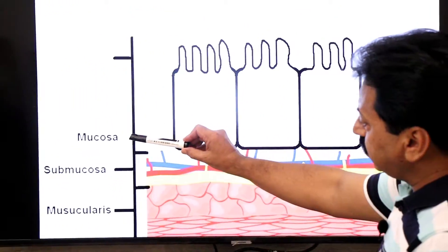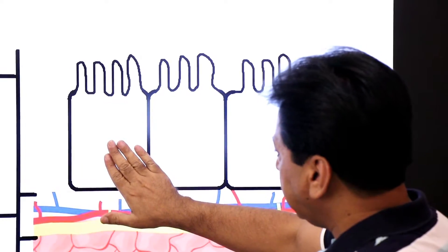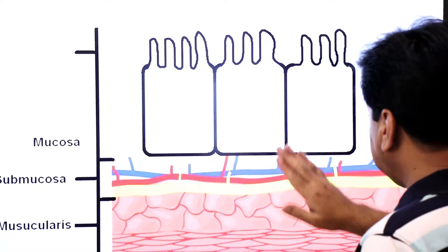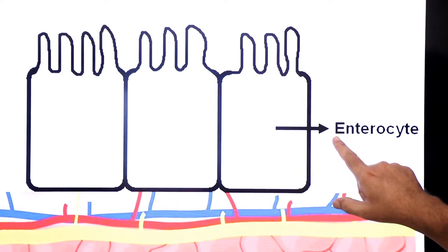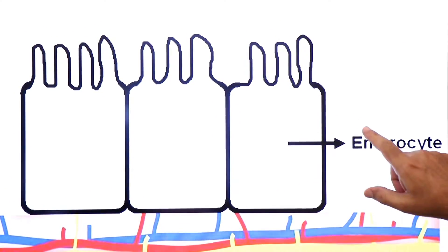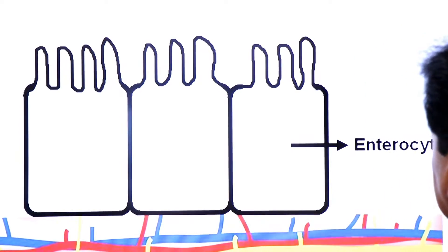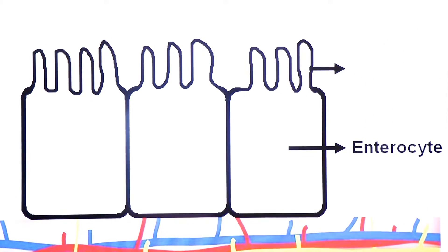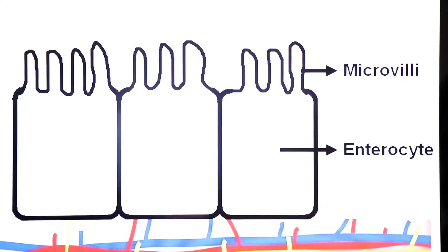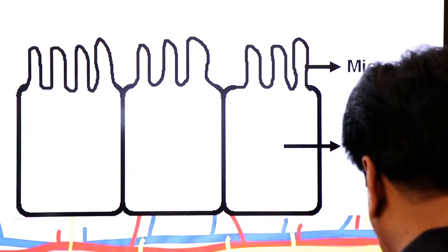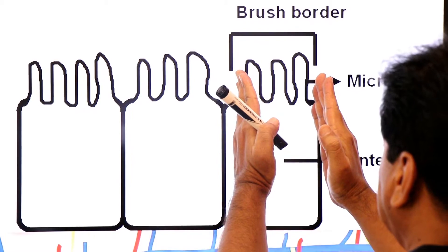In the mucosa of the jejunum you can see certain cells. These are the epithelial cells of the mucosa present in the jejunum. These epithelial cells are known as enterocytes. The plasma membrane of enterocytes evaginates to form projections or folds known as microvilli. This structure is called the brush border because its appearance looks like a brush border.